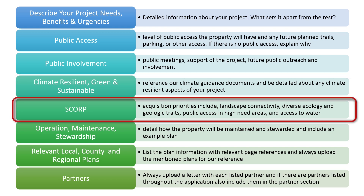You can receive up to 15 points for answering the question of how your project will promote the State Comprehensive Outdoor Recreation Plan, or SCORP. The acquisition priorities for the SCORP are landscape connectivity, diverse ecological and geological traits, providing access in high need areas, and providing access to water.